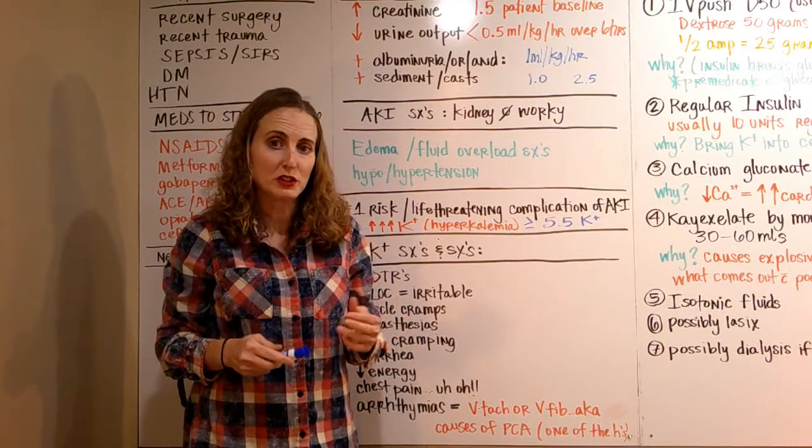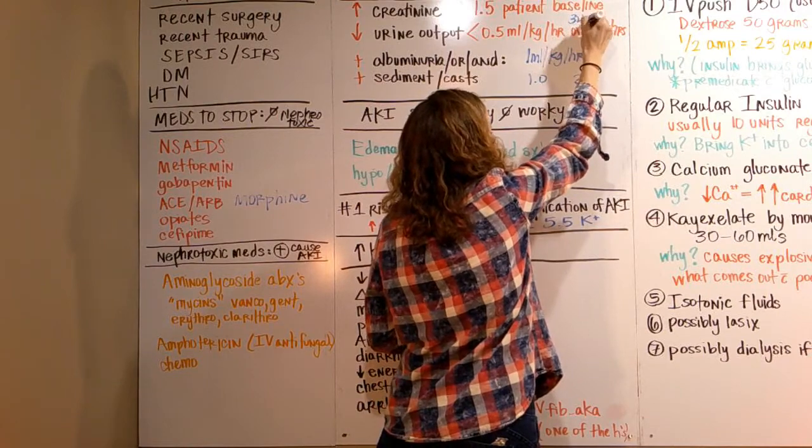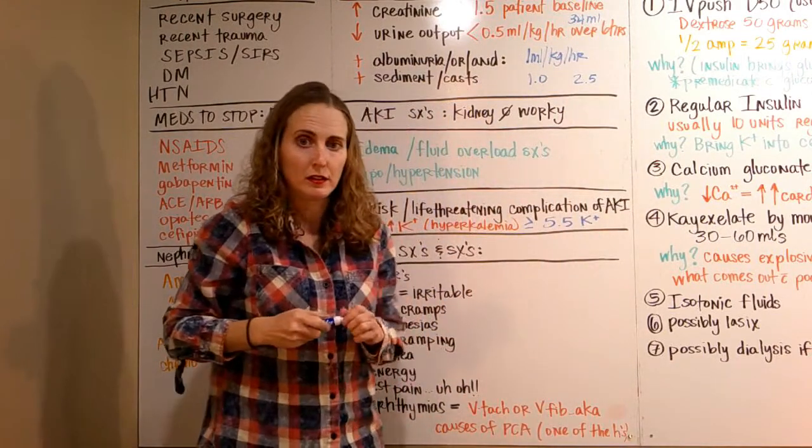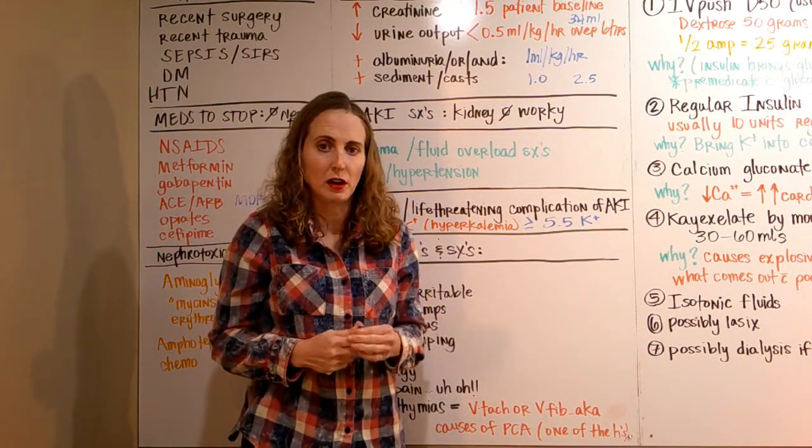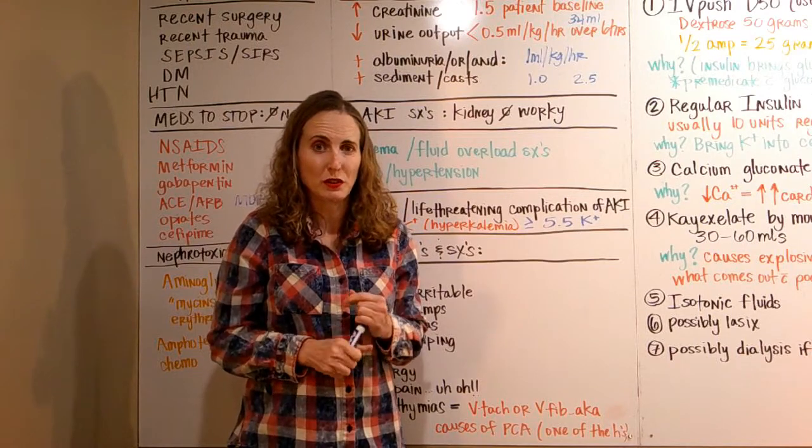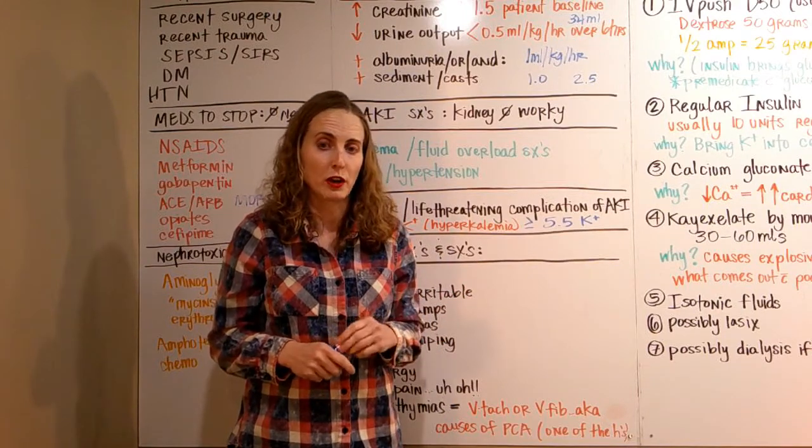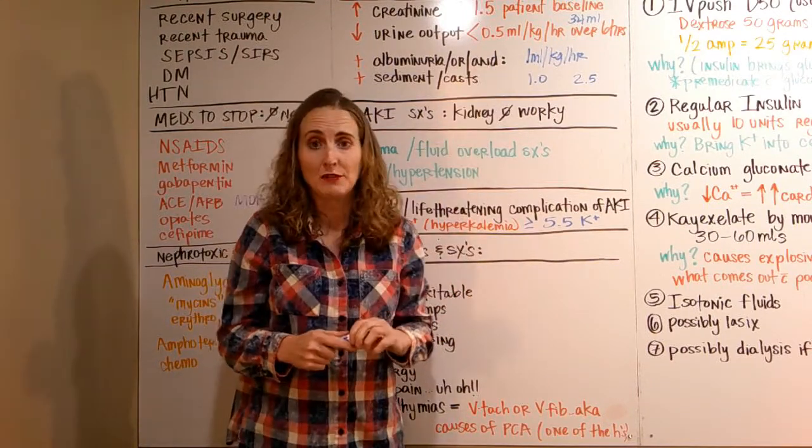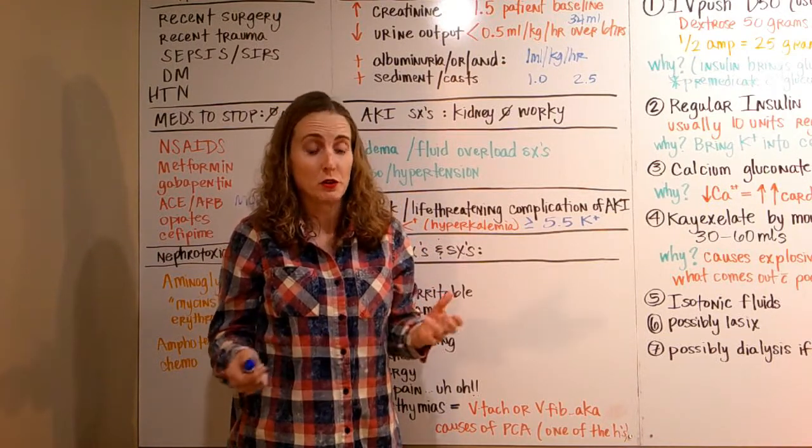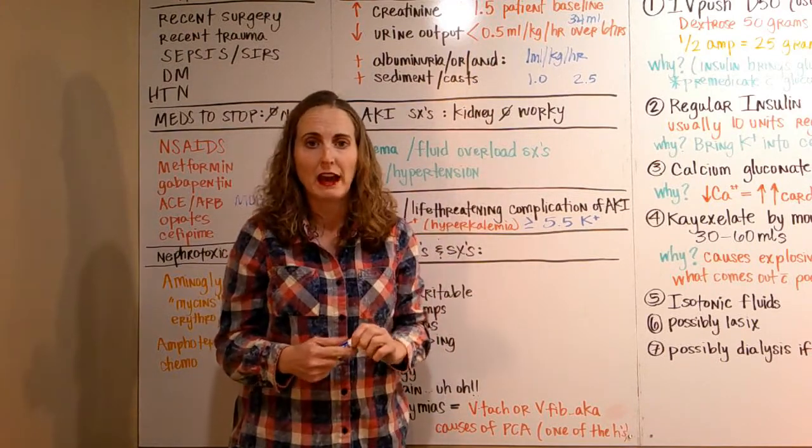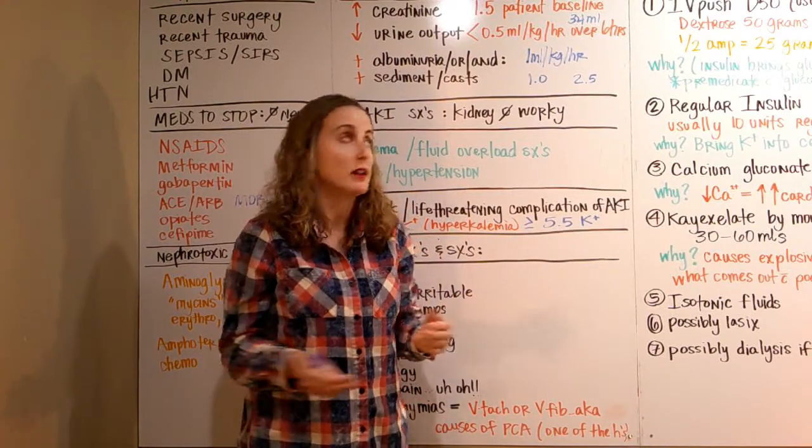Let's pretend we have a 150-pound patient. Half a milliliter per hour would be roughly 34 mils in an hour. Anything less than that is pretty severe as far as acute kidney injury. That 30 mils we say per hour is actually less than what a 150-pound patient would need to make that half mil per kg per hour. If they're 30 mils an hour and they're a 200-pound patient, they're way below that half mil mark. You'll have to convert them into kilograms and multiply by 0.5 to figure out their minimum urinary output.